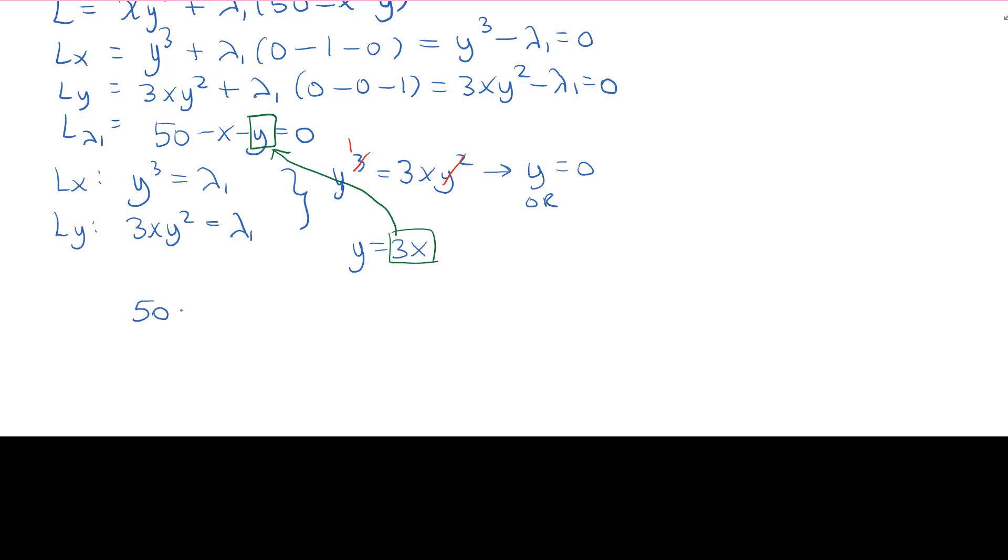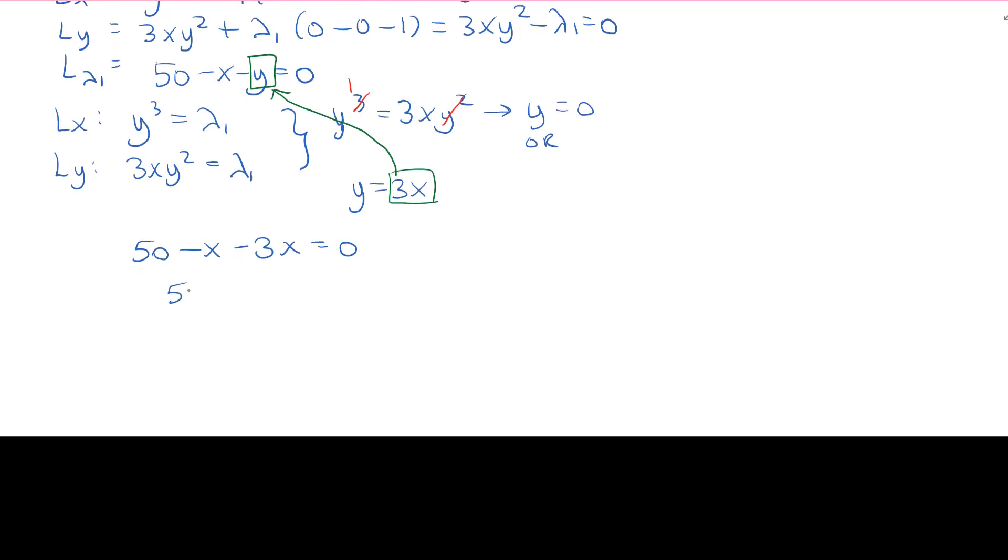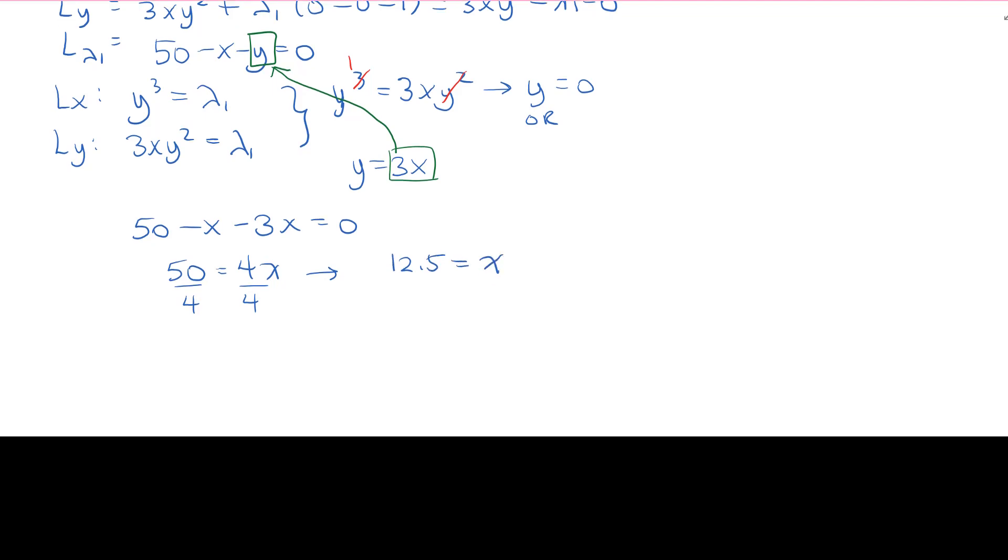And we get 50 minus x minus 3x equals to 0. 50 equals to 4x. Divide both sides by 4 and 12.5 equals to x.